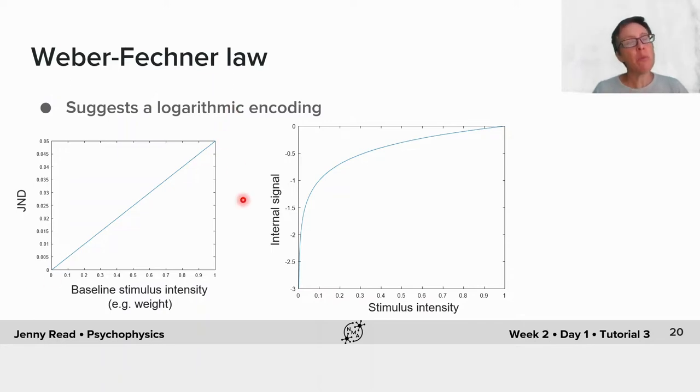That observation immediately suggested the idea of a logarithmic encoding of stimulus intensity. You've got some physical properties such as weight or mass, the number of atoms, or luminance, number of photons. That's causing some internal signal which is responsible for our perception.